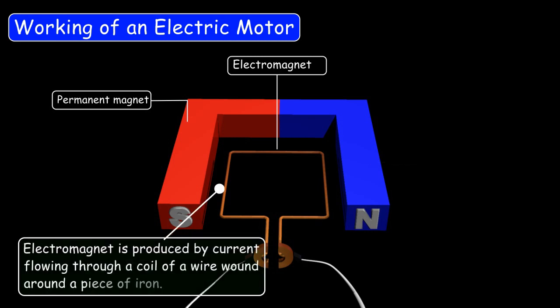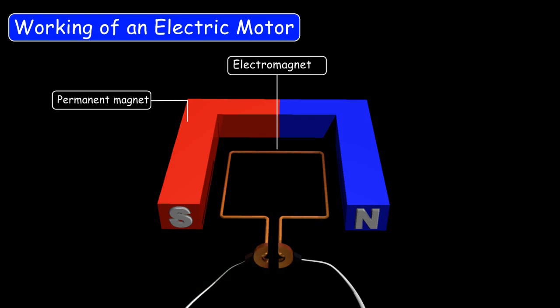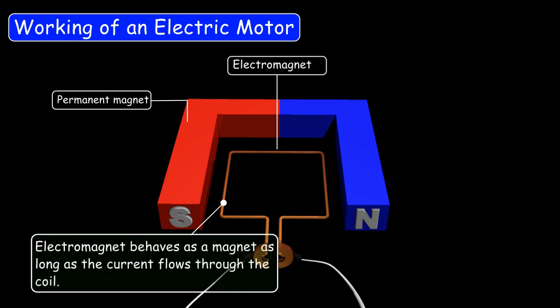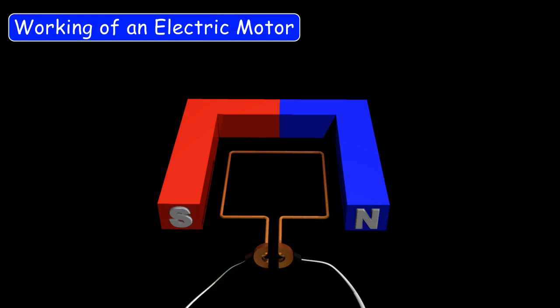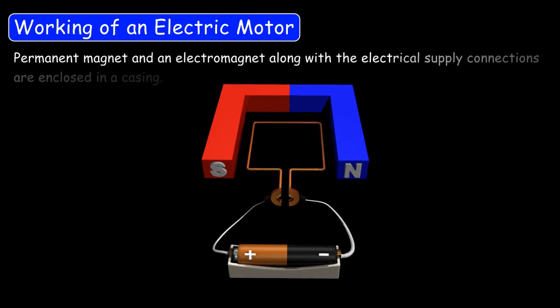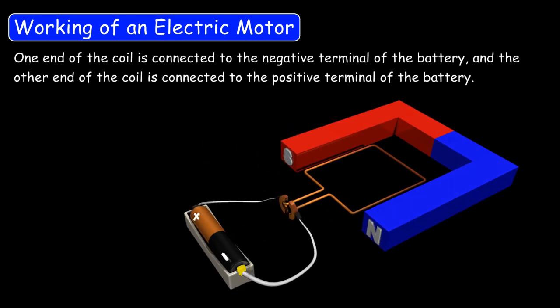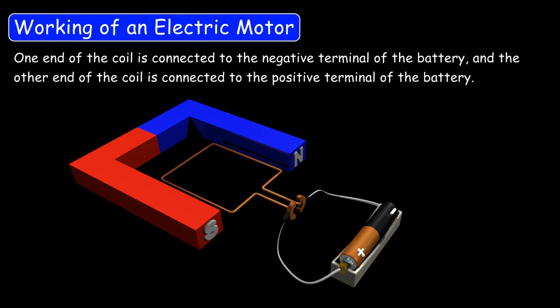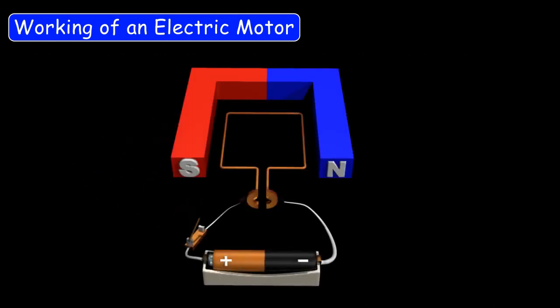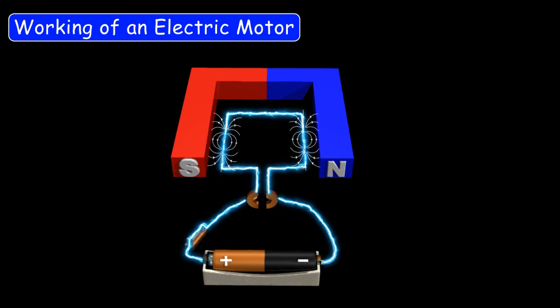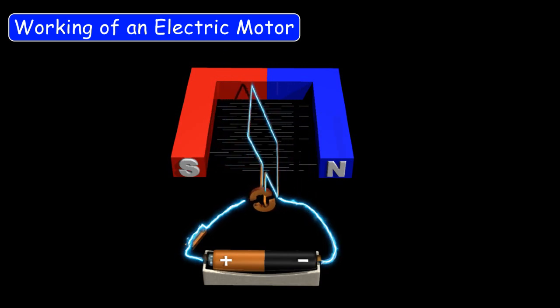It maintains its magnetism over a long period of time. Whereas an electromagnet is produced by the current flowing through a coil of wire wound around a piece of iron. An electromagnet behaves as a magnet as long as the current flows through the coil. Both these magnets — the permanent magnet and the electromagnet — along with the electrical supply connections, are enclosed in a casing. One end of the coil is connected to the negative terminal of the battery, and the other end of the coil is connected to the positive terminal of the battery.